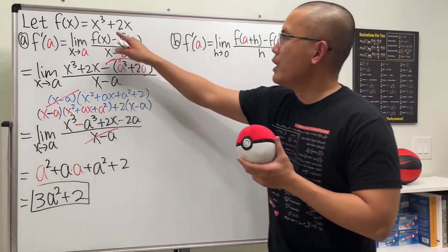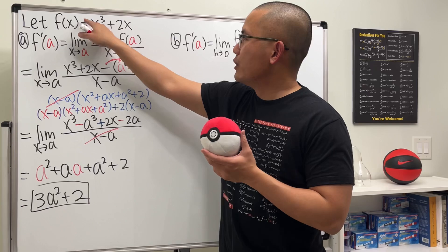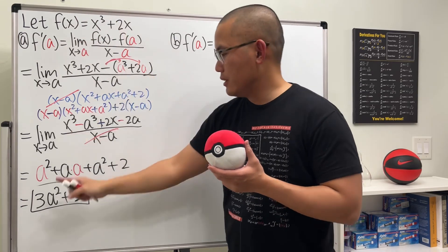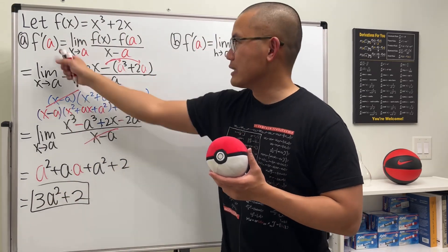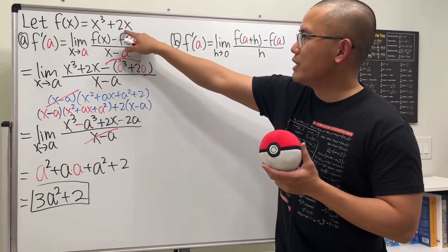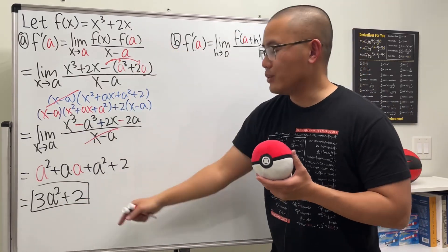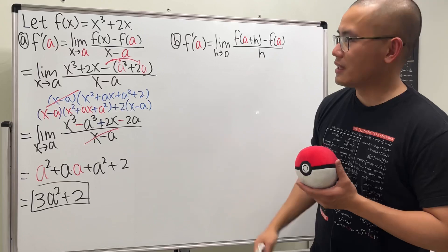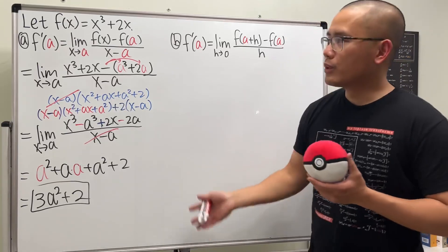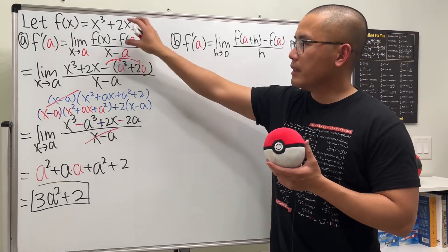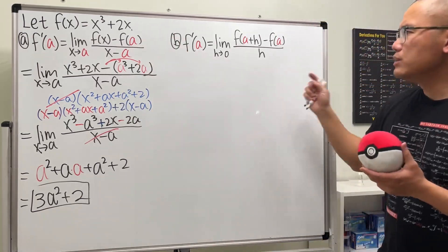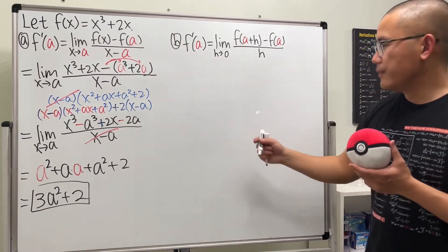Yes, we could use the power rule — bring the power to the front: 3x², substitute a to get 3a², and the derivative of 2x is just 2. So we can do this in three seconds. But that's how you work through the limit definition using Version 1 with f(x) = x³ + 2x. Now let's look at Version 2.